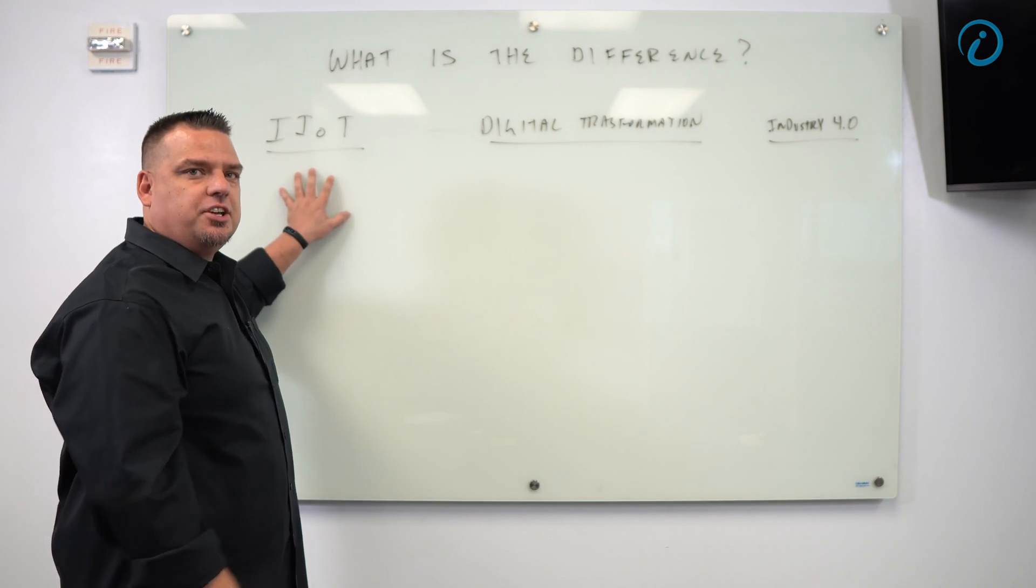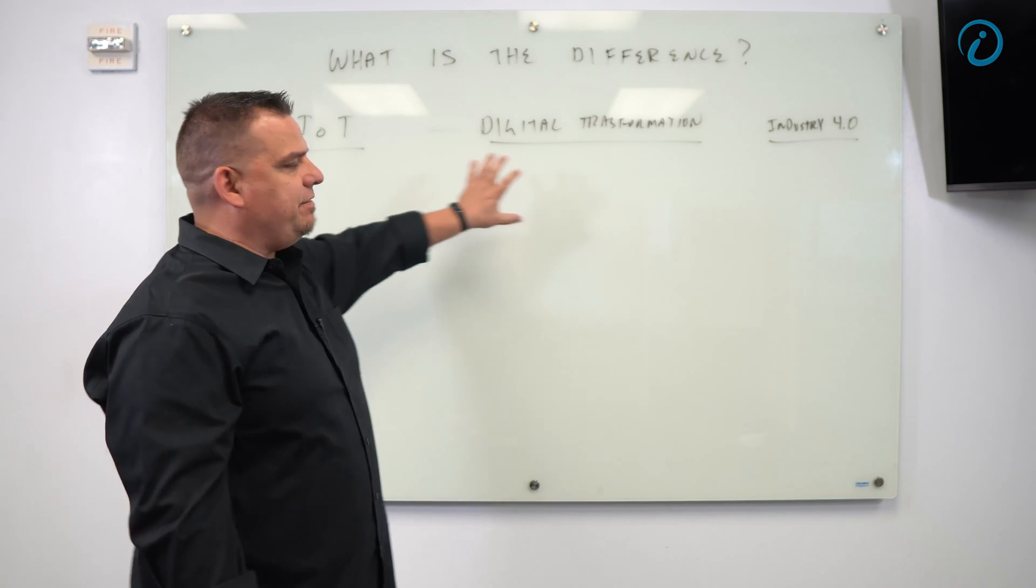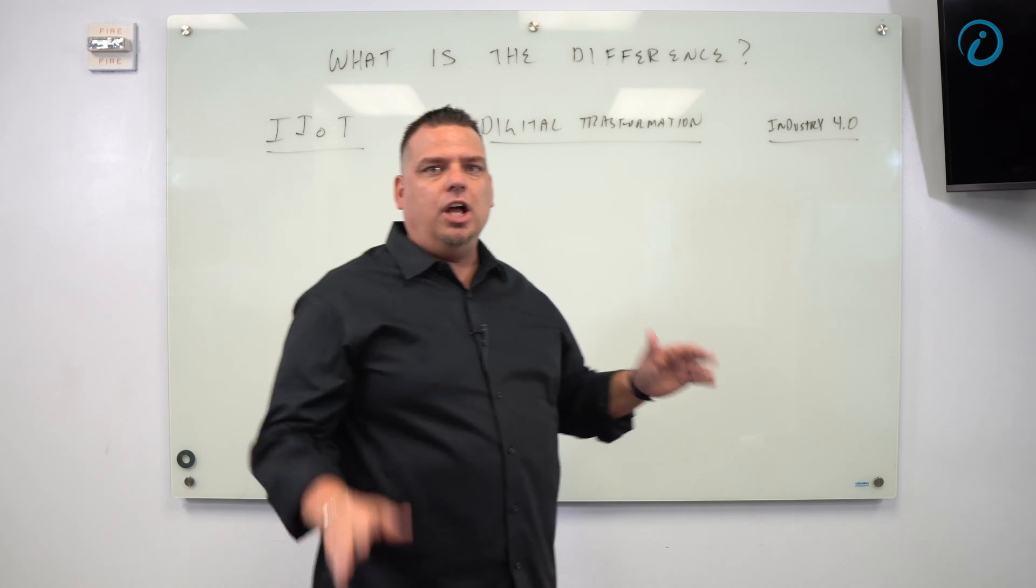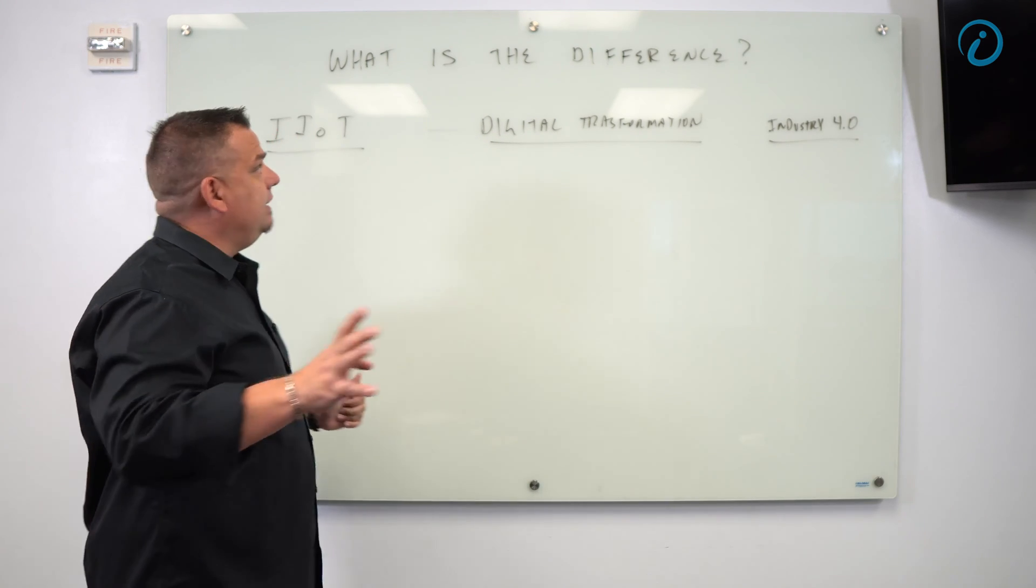We have IIoT, which is the Industrial Internet of Things, digital transformation, and Industry 4.0. What is the difference? It's very simple.